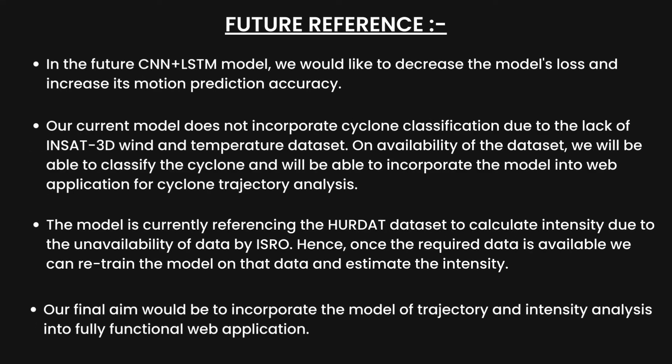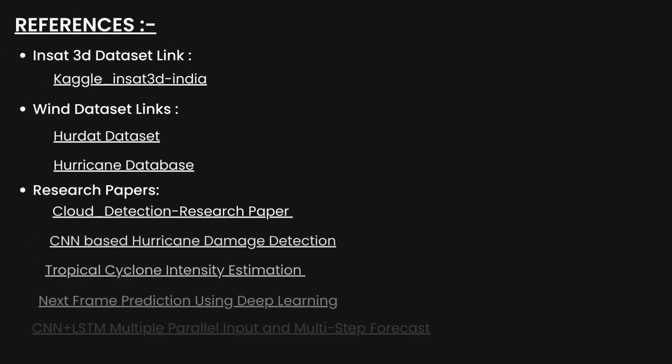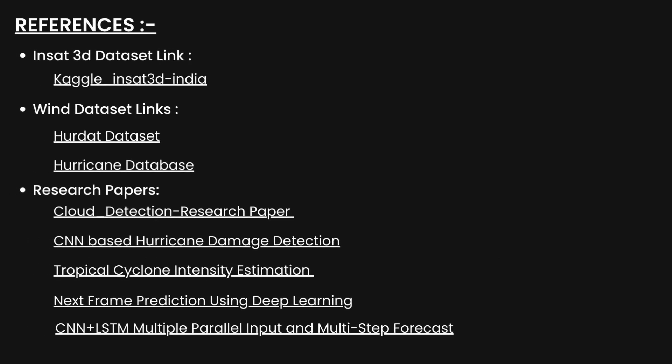In the future, we would like to decrease the model's loss and increase its motion prediction accuracy. The model currently references the HERDA dataset to calculate intensity due to unavailability of data from ISRO. Once the required data is available, we can retrain the model and estimate the intensity. Our final aim is to incorporate trajectory and intensity analysis into a fully functional web application. The last slide of our PPT contains our references, and with that I would like to conclude our presentation. Thank you for your time.